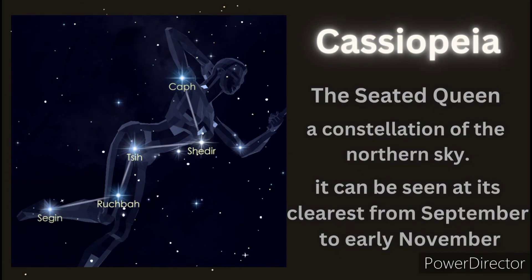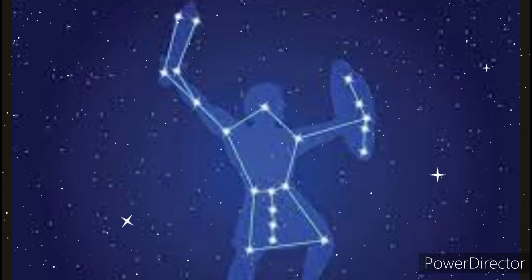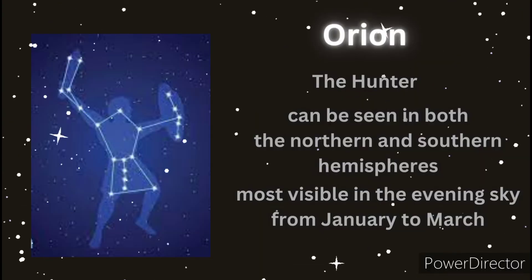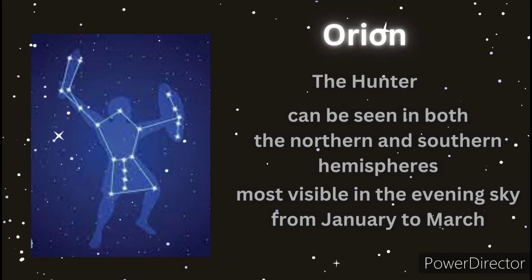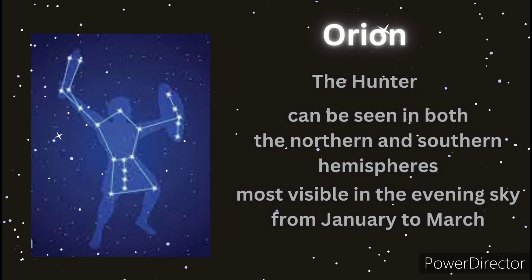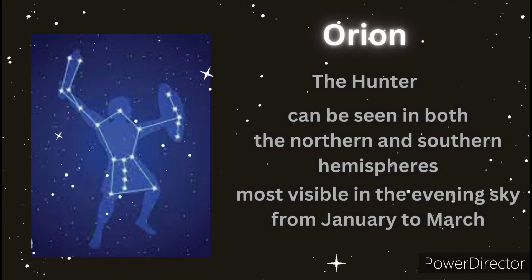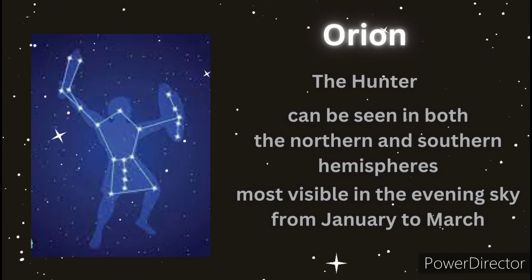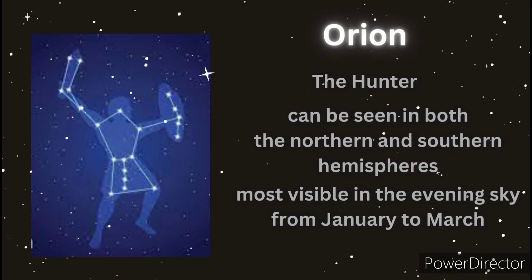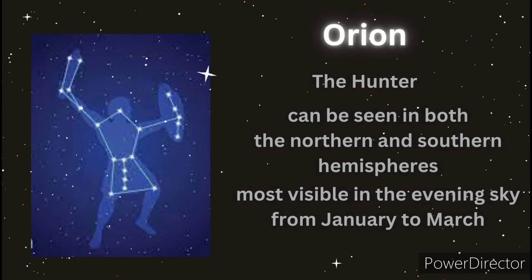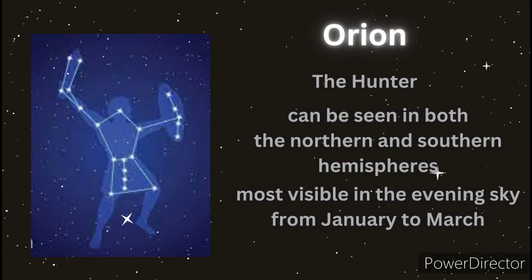Do you see a man with a sword and shield? This is Orion, also known as the Hunter. It can be seen in both the northern and southern hemispheres and is most visible in the evening sky from January to March. In the northern hemisphere, it indicates the coming of cold weather. Orion is also known as Balatik in the Philippines. The constellation is used by Filipino ancestors to determine the beginning of their harvest and planting periods.